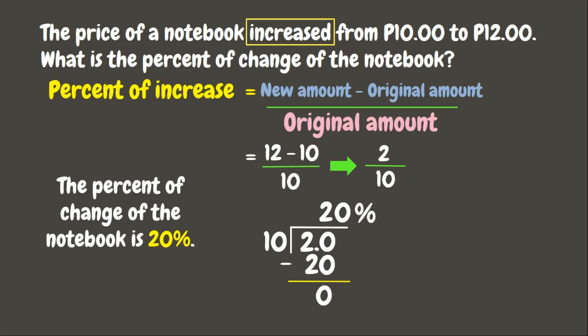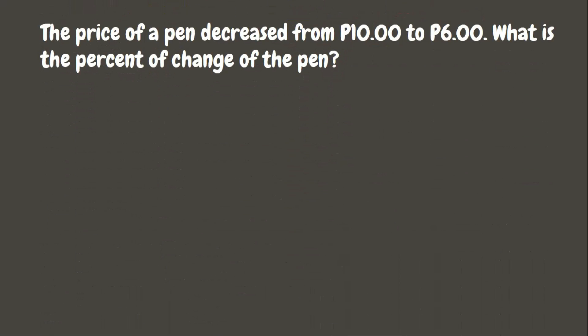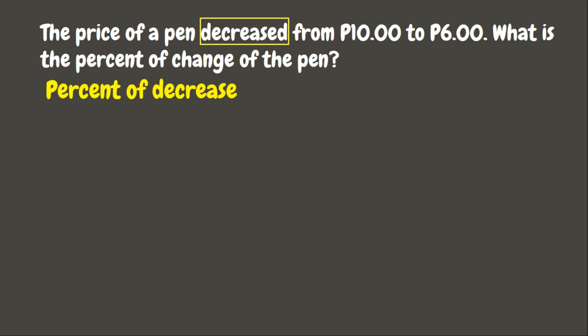Wonderful. Now let's have our second example. The price of a pen decreased from ten pesos to six pesos. What is the percent of change of the pen? Since the price of the pen decreased, it means that we are looking for the percent of decrease.